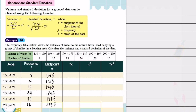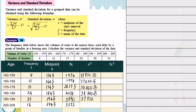The last midpoint is 204.5. Now we calculate fx — frequency multiplied by midpoint. Using a calculator you will obtain those values. x squared means the square of the midpoint, giving quite large numbers. fx squared is frequency multiplied by x squared.